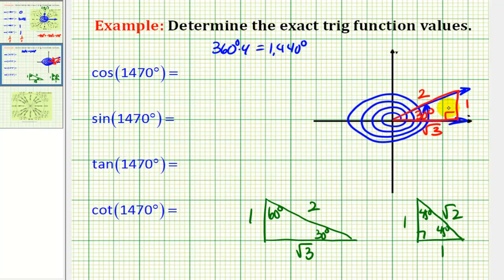So we can use this reference triangle to determine these four trig function values. Cosine theta would be the ratio of the adjacent side to the hypotenuse. So that would be square root of 3 over 2.